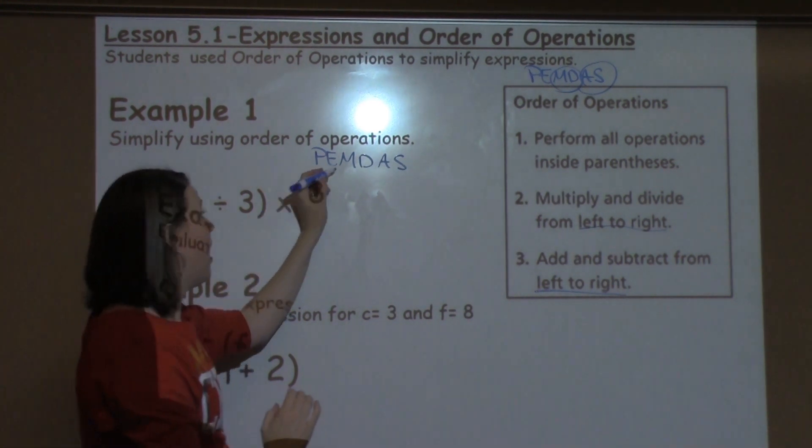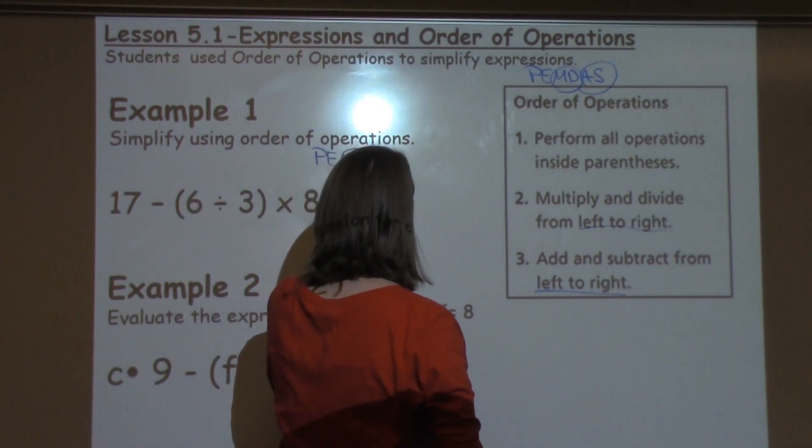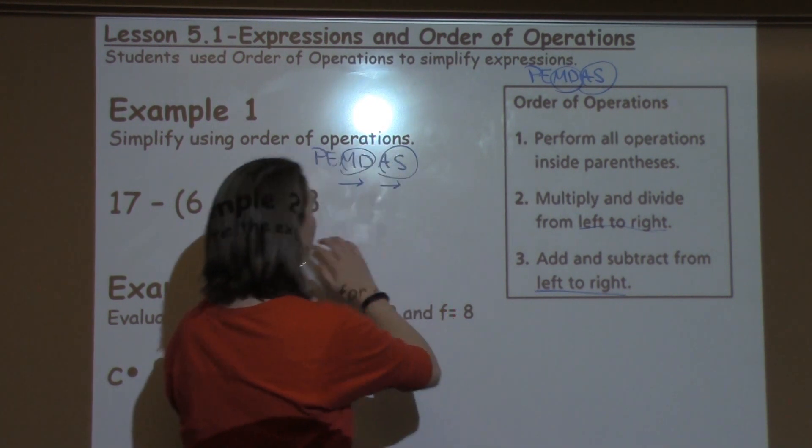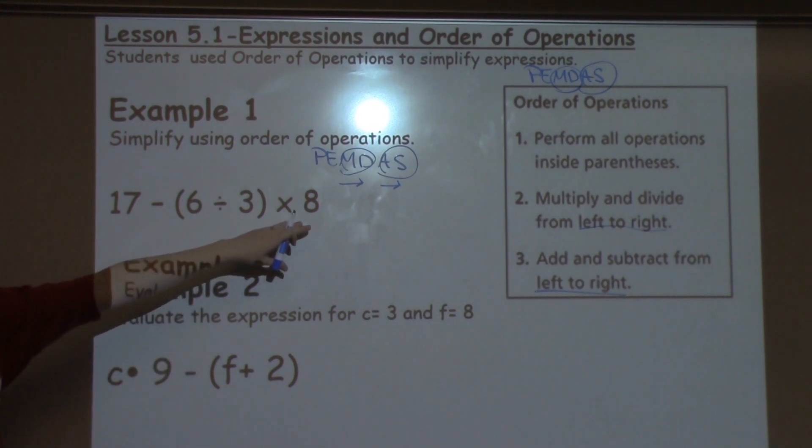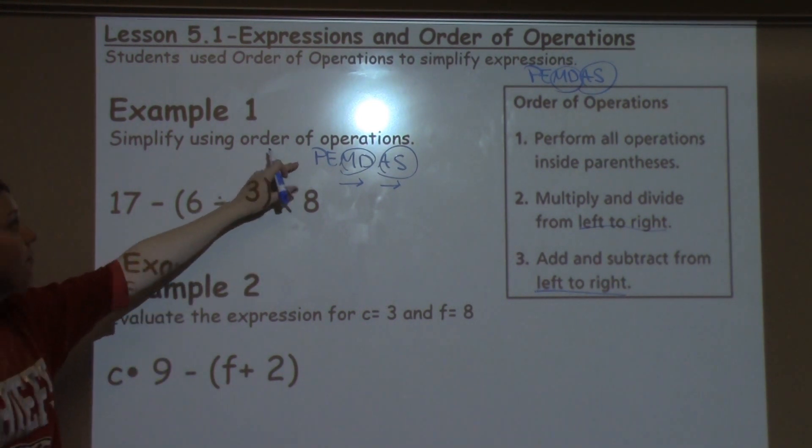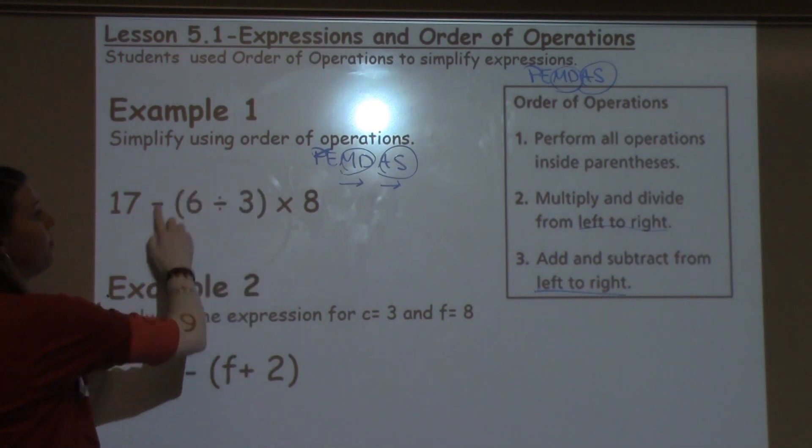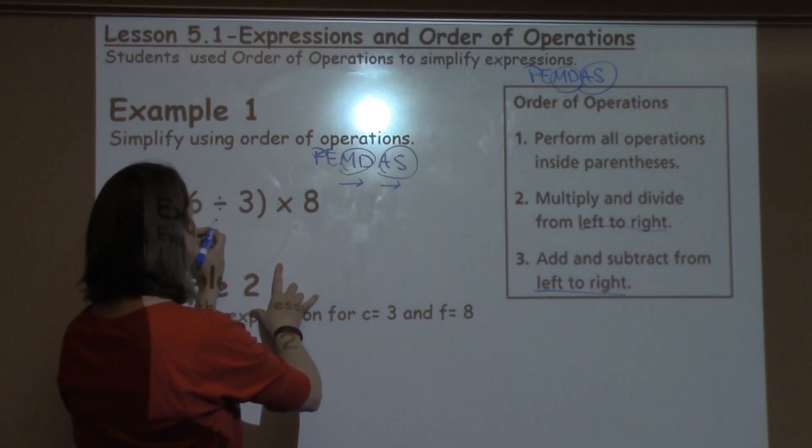I go ahead and encourage students to go ahead and do multiplication and division together, addition and subtraction together, and have them like make little arrows going from left to right. Alright, looking at this very first question, the first thing I see is I do have parentheses, so I go ahead and check it off. I'm going to solve in the parentheses first. I have 6 divided by 3, which I know is 2.